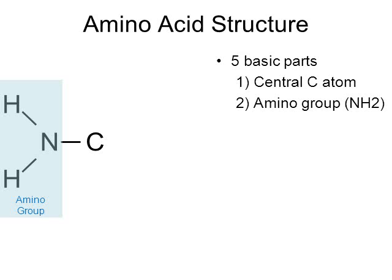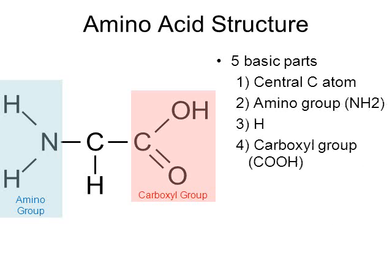Amino acids have an amino group. They also have a single hydrogen attached to the carbon — all 20 amino acids have a single hydrogen. All 20 amino acids also have a COOH group called a carboxyl group. 'Carb' implies carbon, and 'oxyl' implies oxygen, so if you mush carbon and oxygen together, you get carboxyl. All amino acids have a carboxyl group.